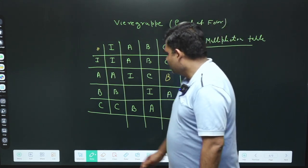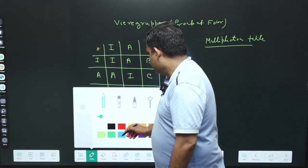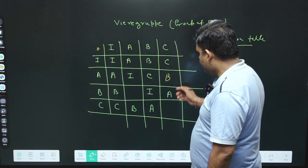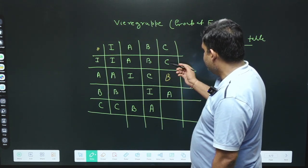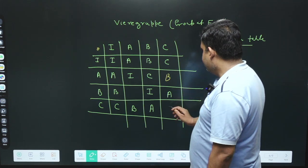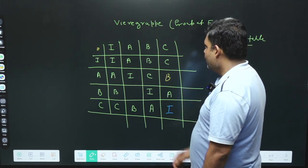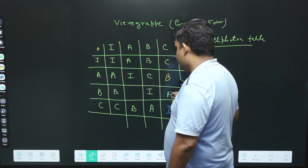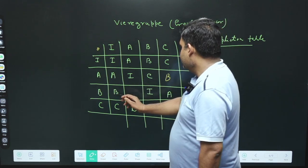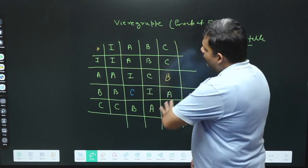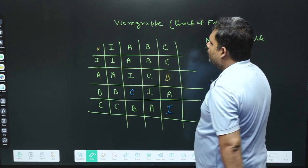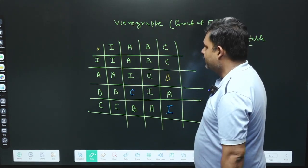Let's try to go for the next part. Just try to see this one. If we are trying to see this, C is there, B is there, A is there, then this value is I. And let's try to go for this particular row. Here B is there, I is there, A is there, so this is your C. And now we have fulfilled this entire multiplication table.